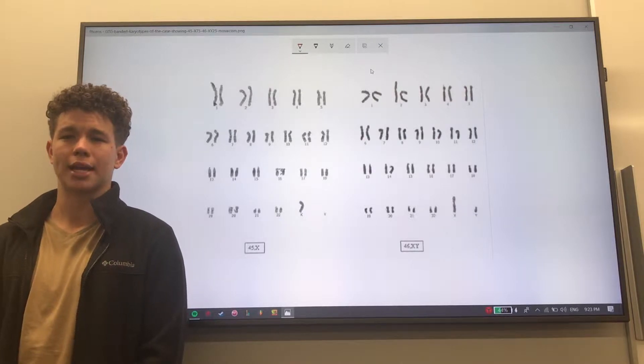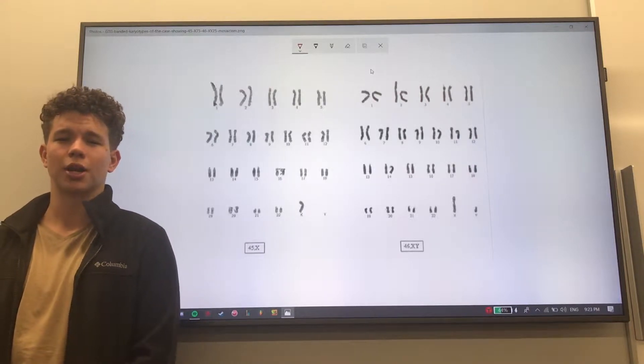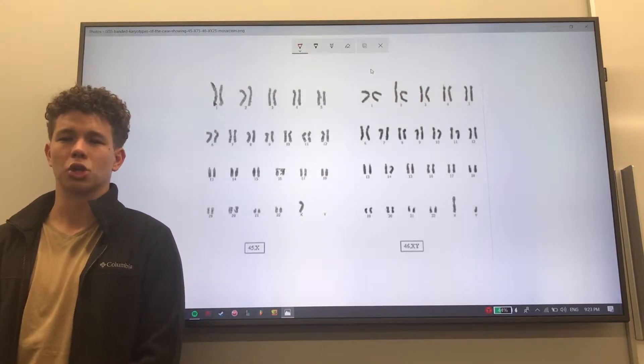Scientists call having more or less than 2n chromosomes aneuploidy in people. This specific type of aneuploidy is called monosomy because it's only one chromosome that's missing.